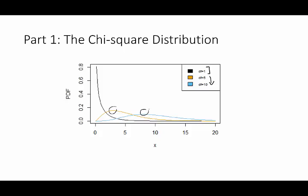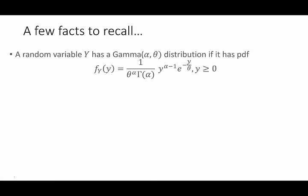A few facts to recall before we start with this video. I first wanted to recall the density function for a gamma distribution because that's going to come into play. I encourage you to pause on the slide and write these down for yourself as notes. A random variable y has a gamma(alpha, theta) distribution if its PDF has the form: 1 over theta to the alpha times gamma(alpha), times y to the alpha minus 1, times e to the minus y over theta. We usually refer to alpha as the shape parameter and theta as the scale parameter.